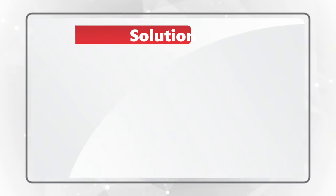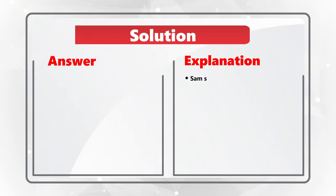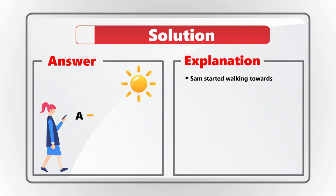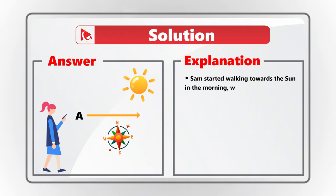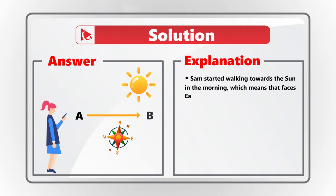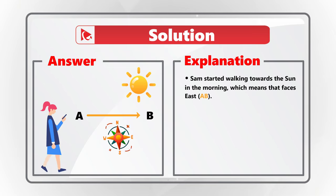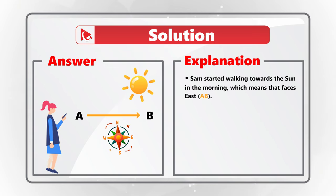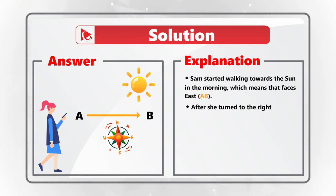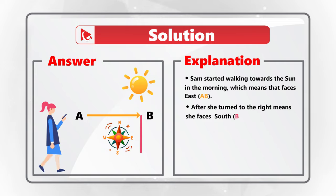Let's start from the beginning. When Sam started walking early morning and faces the sun, it means she faces east, because the sun rises in the east. After Sam turned to the right, she faces south now.